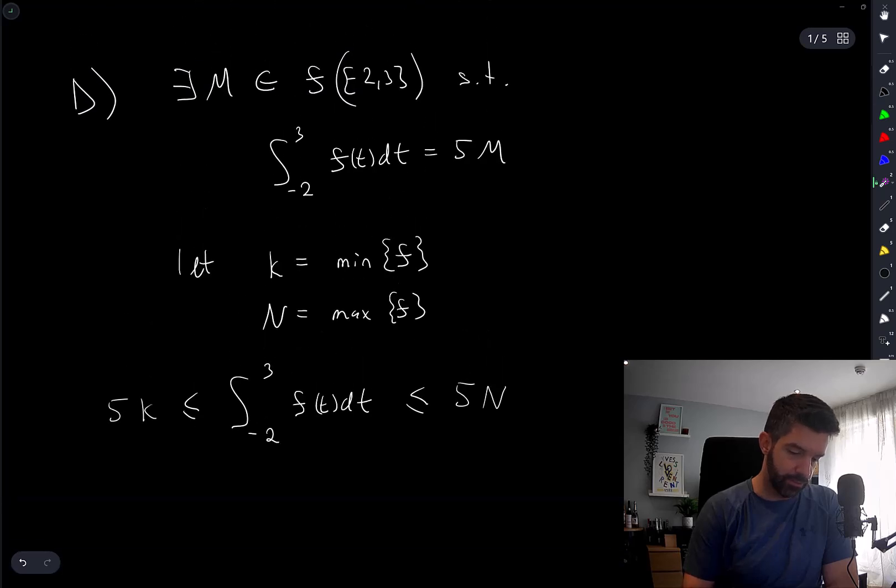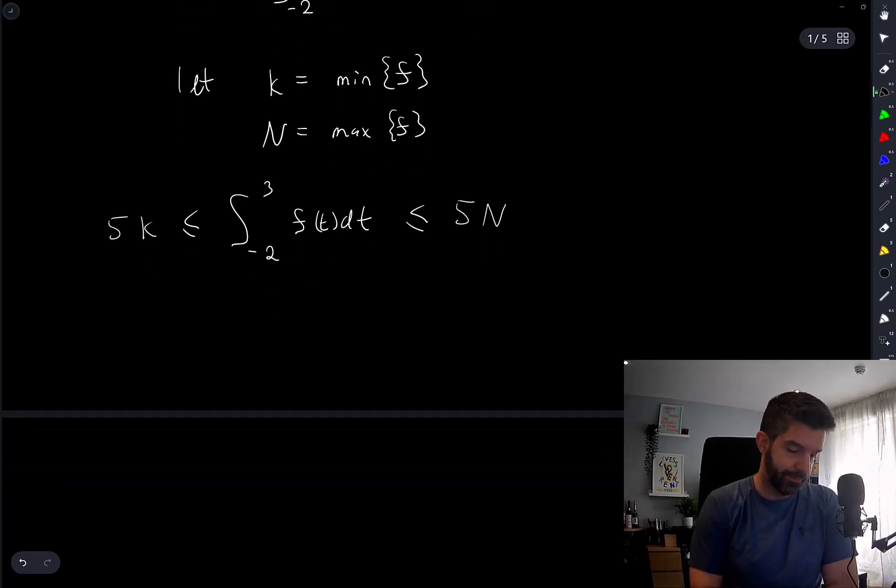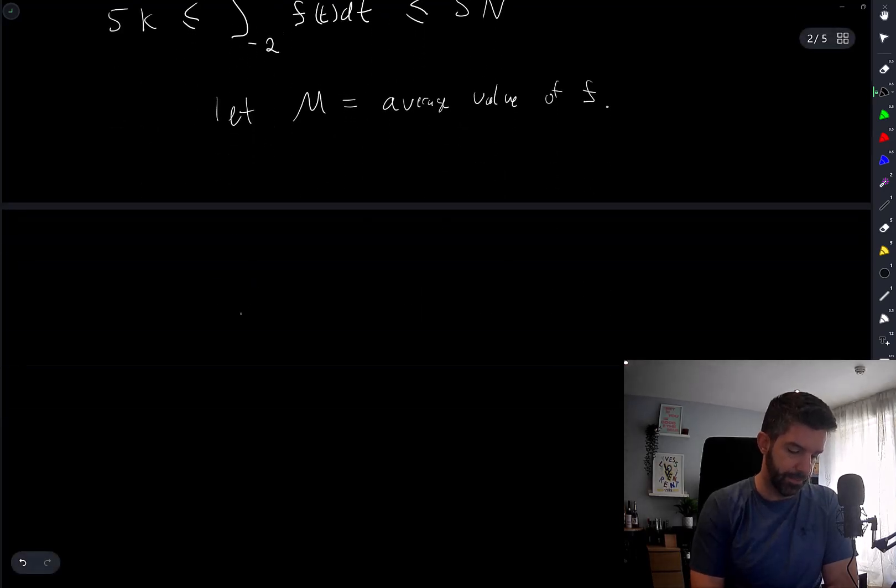So this actually is true. Because clearly, if that's the minimum and that's the maximum, then there is some number here which, if I replace f with something between the minimum and maximum, makes this true. And I suppose you replace it with the average, right? Let m be equal to average value of f. Which, I mean, m is equal to 1 over 5 times this integral.